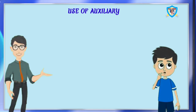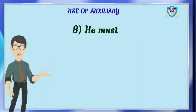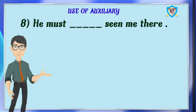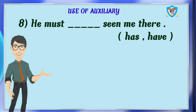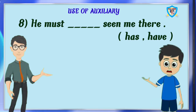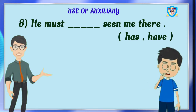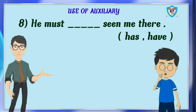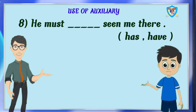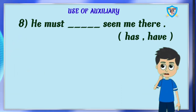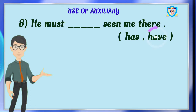Question 8: he must dash seen me. Options are has, have. The answer is have. Yes, you are right. Very good answer. He must have seen me. It is present perfect, so we have to use have.